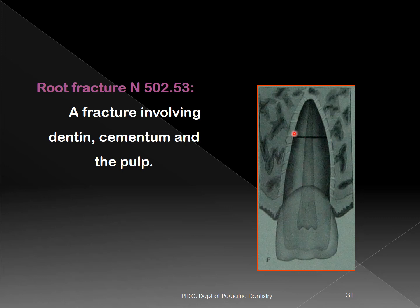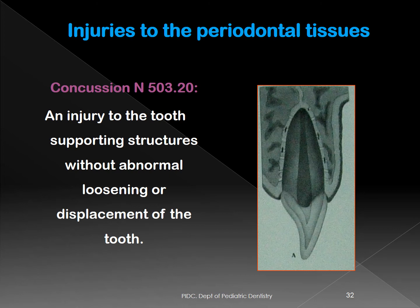A root fracture is a horizontal fracture involving dentine, cementum, and pulp — similar to what we saw in Ellis and Davies. This is classified separately. Note that a vertical root fracture can also occur, but here we call it simply a root fracture.